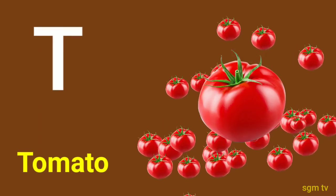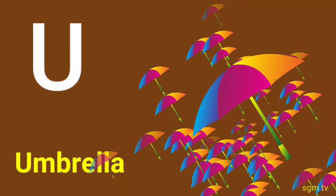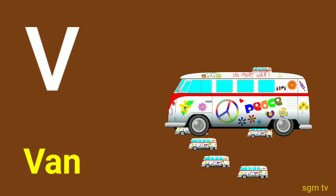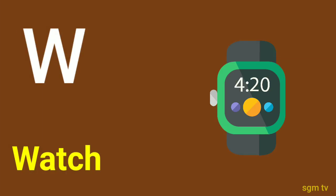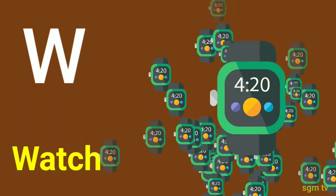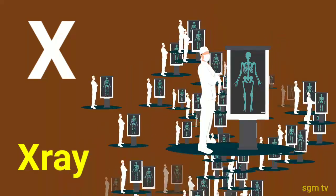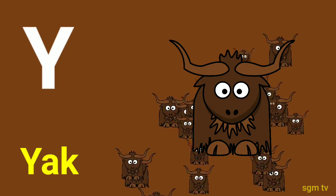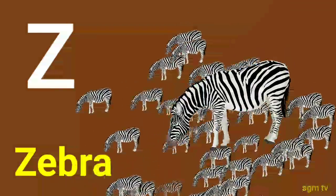T for tomato, U for umbrella, V for van, W for watch, X for x-ray, Y for jag, Z for zebra.